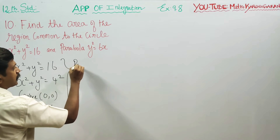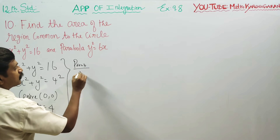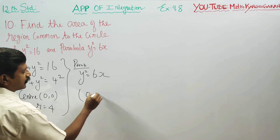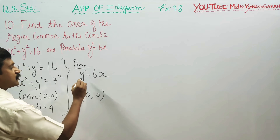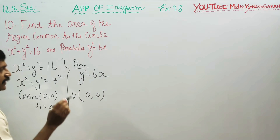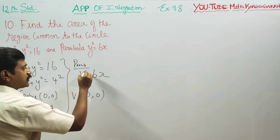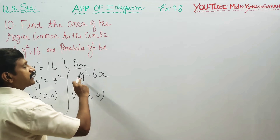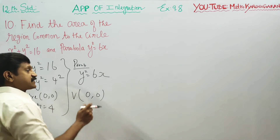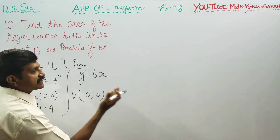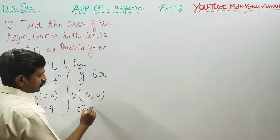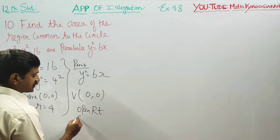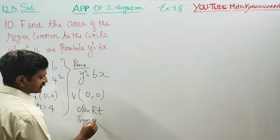Next, coming to the parabola: y² = 6x. The parabola opens to the right — it is an open right parabola. That means y² is symmetrical about the x-axis.